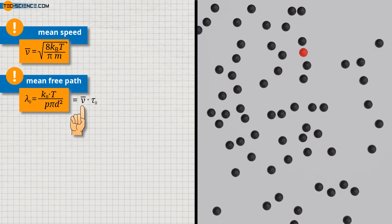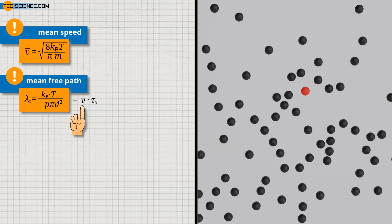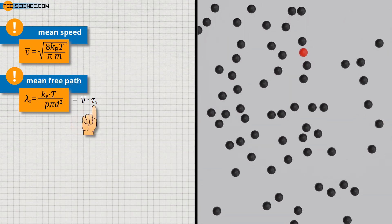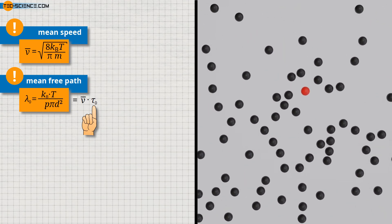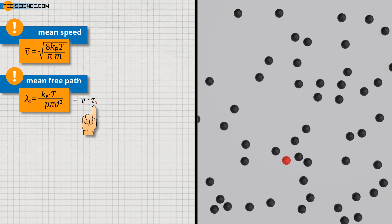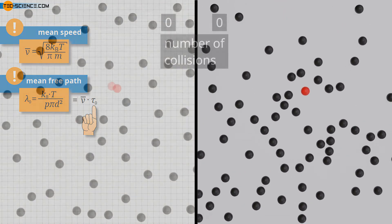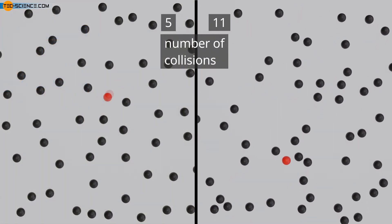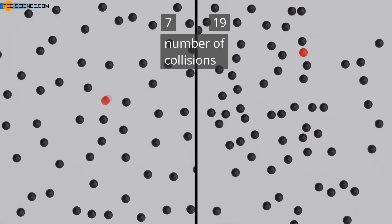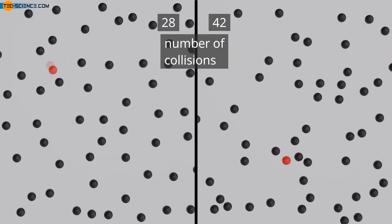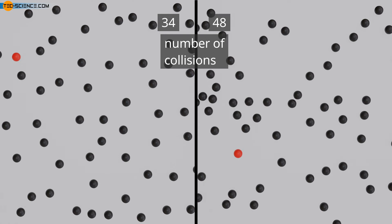Therefore, the mean time between two collisions is shortened and the mean free path is reduced accordingly. Note that the time between two collisions is not determined by the absolute speed of the molecule, but by the relative speed with which two molecules are approaching each other. Only in the special case of resting particles is the relative speed equal to the absolute speed.